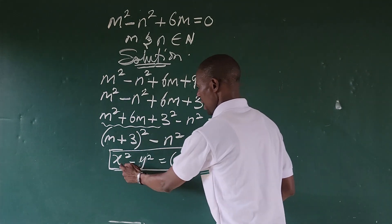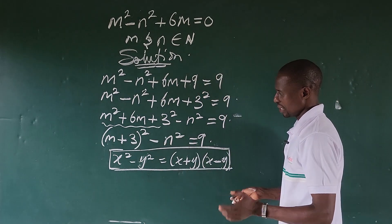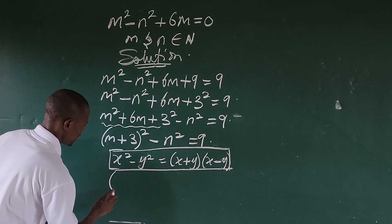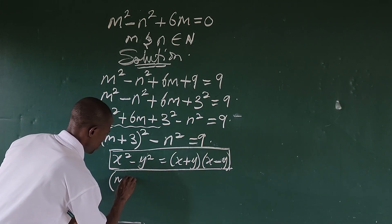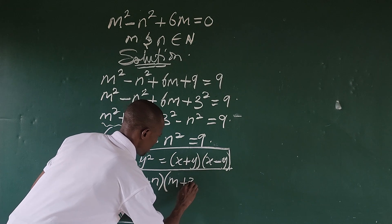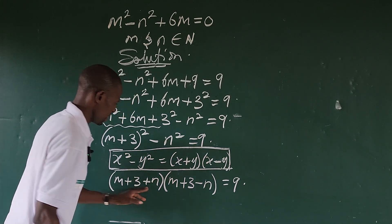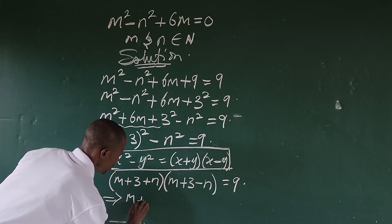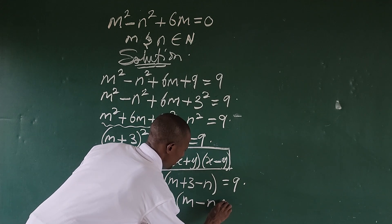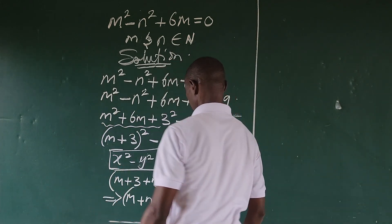Applying the difference of two squares, this gives us: bracket (m + 3 + n) times bracket (m + 3 − n) equal to 9. So we have (m + n + 3)(m − n + 3) equal to 9.